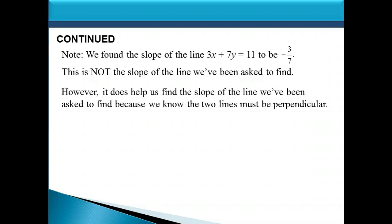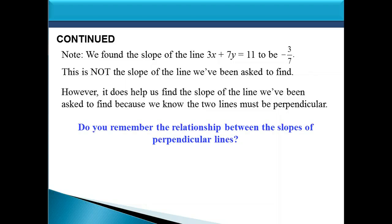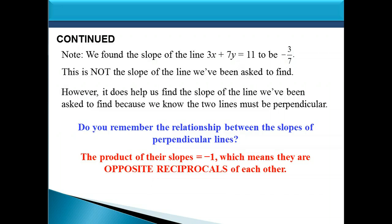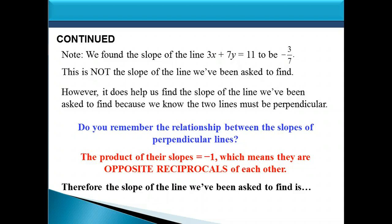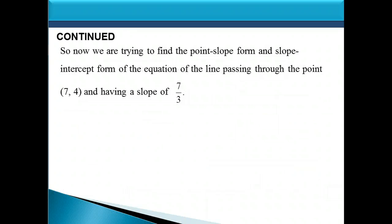Since the two lines must be perpendicular, the product of their slopes equals negative 1, meaning they are opposite reciprocals of each other — opposite signs and reciprocals. Therefore, the slope of the line we need to find is positive 7 thirds: opposite in sign to negative 3 sevenths, and the reciprocal of 3 sevenths is 7 thirds. So now we have slope 7 thirds and the point 7, 4.